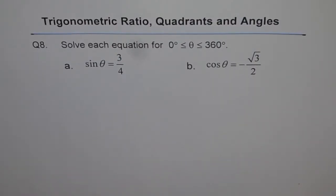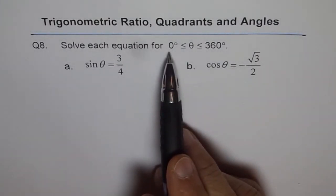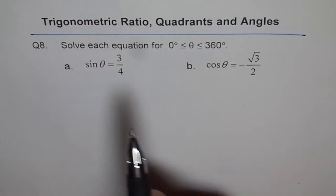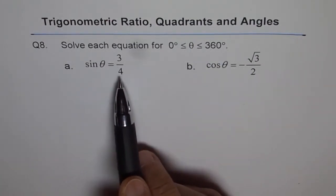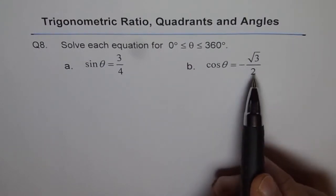Trigonometric Ratio, Quadrants and Angles. Question 8. Solve each equation for 0° ≤ θ ≤ 360°. First one is sin θ = 3/4 and second one is cos θ = -√3/2.